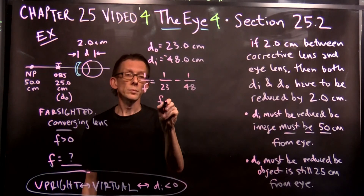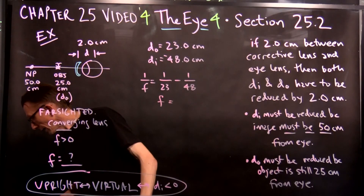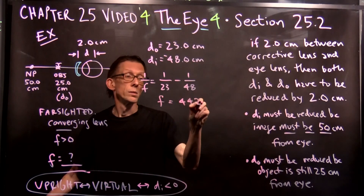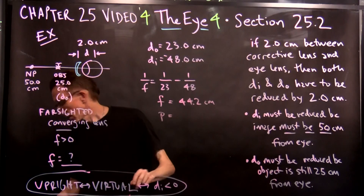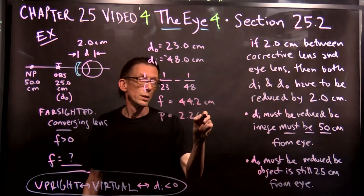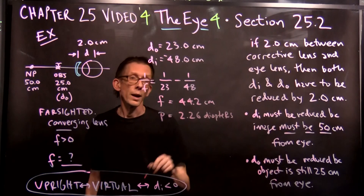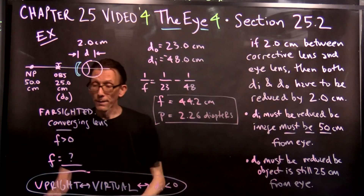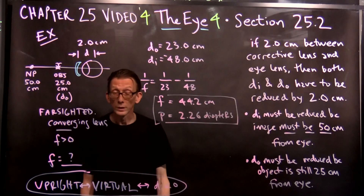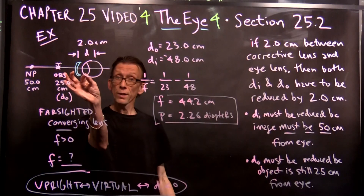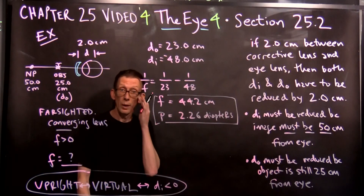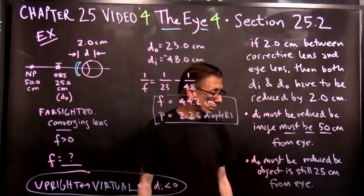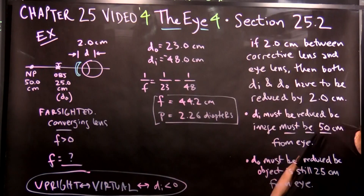If you do that math, f = 44.2 centimeters, and the power is now 2.26 diopters. So we figured out the focal length and the power for both cases — not correcting for that lens-eye distance, and then correcting for it. That's it for this example. I will see y'all later. Bye.